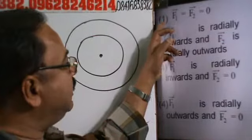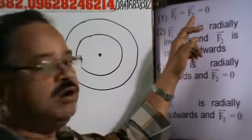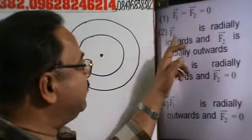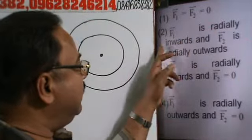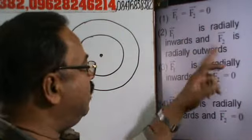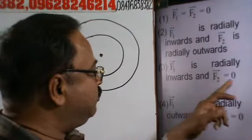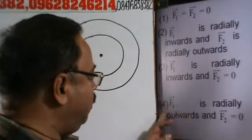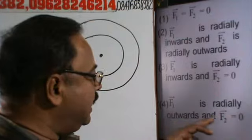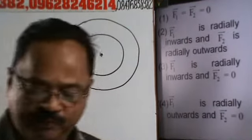We need to identify the correct option. Option 1: vector F1 is equal to vector F2 is equal to 0. Option 2: vector F1 is radially inward and F2 is equal to 0. Option 3: vector F1 is radially outward and F2 is equal to 0.